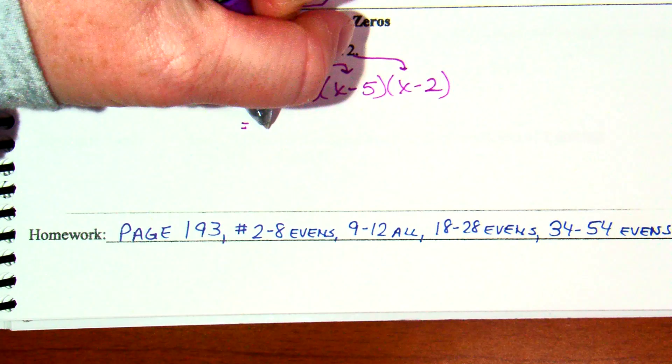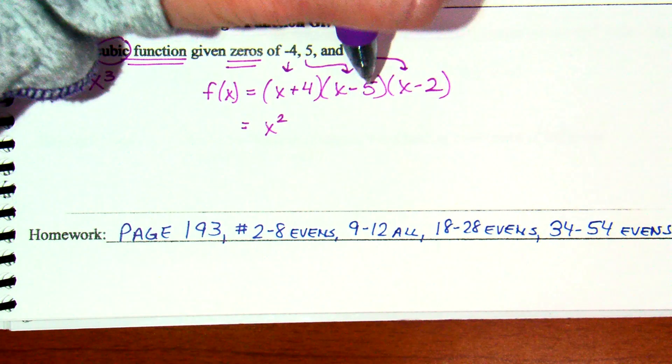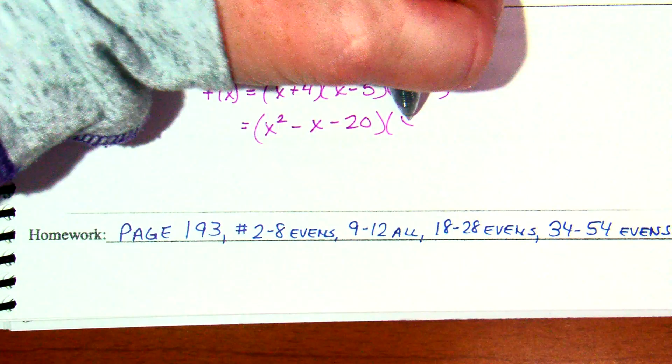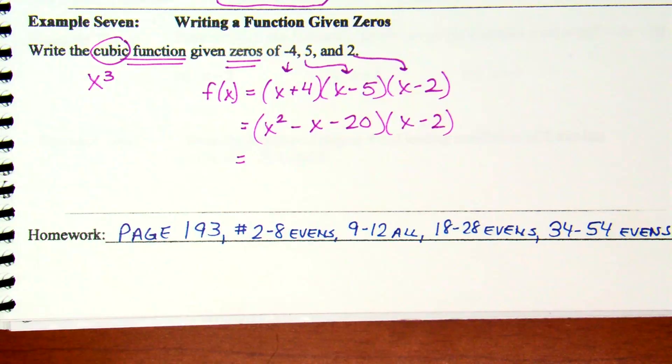Okay. So, if we foil x plus 4. And you can pick any two to start with, right? It doesn't matter there. But if I just go pick these two. So, x plus 4 times x minus 5 is x squared minus 5x plus 4x is going to make it minus 1x. 4 times minus 5 is minus 20. Still carrying down my x minus 2.